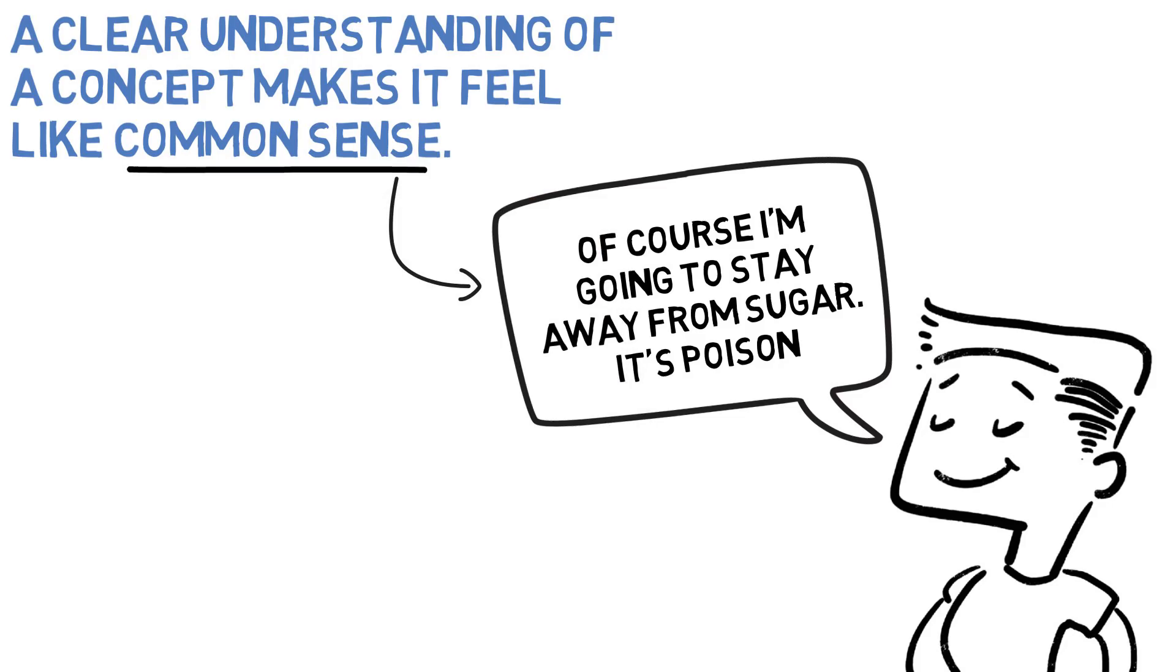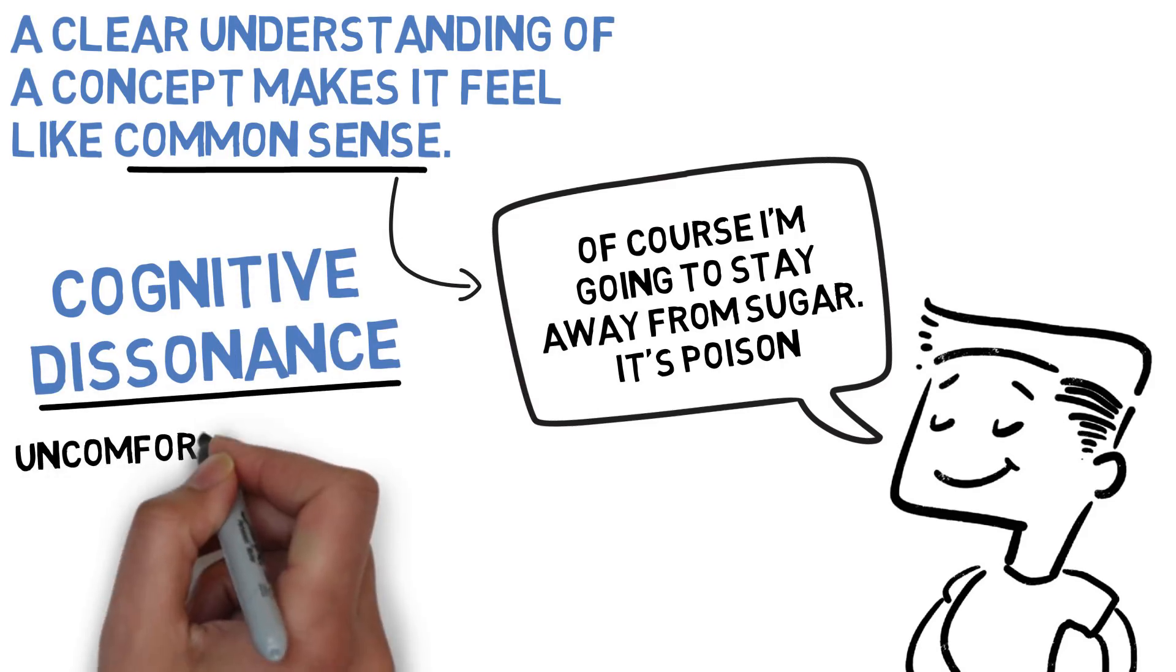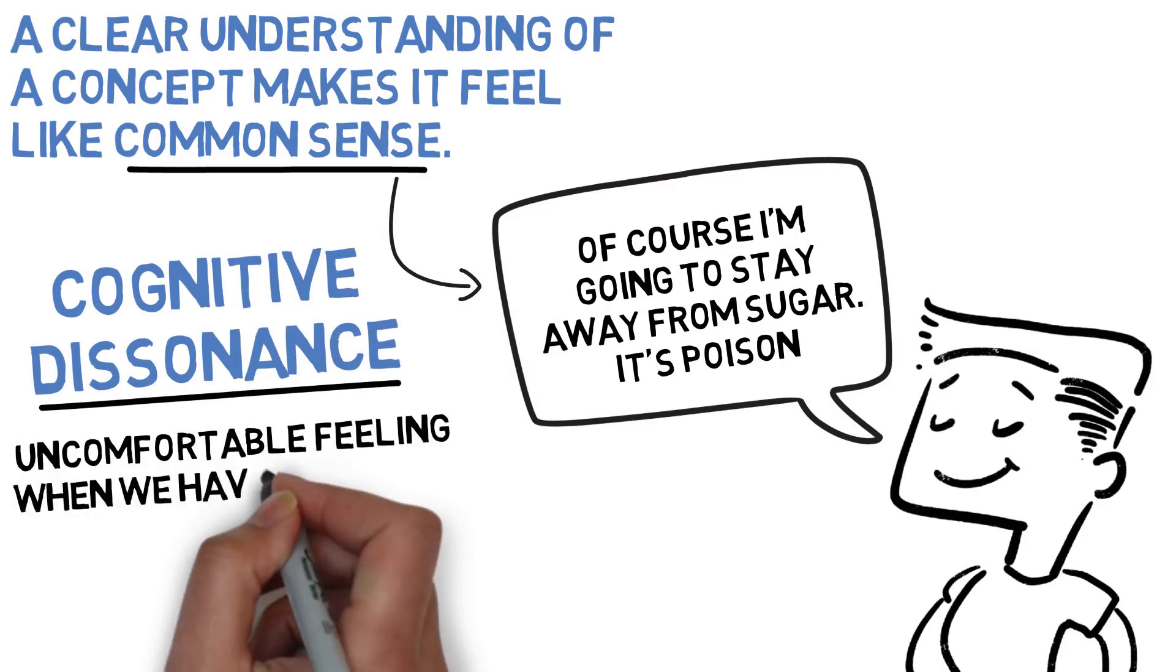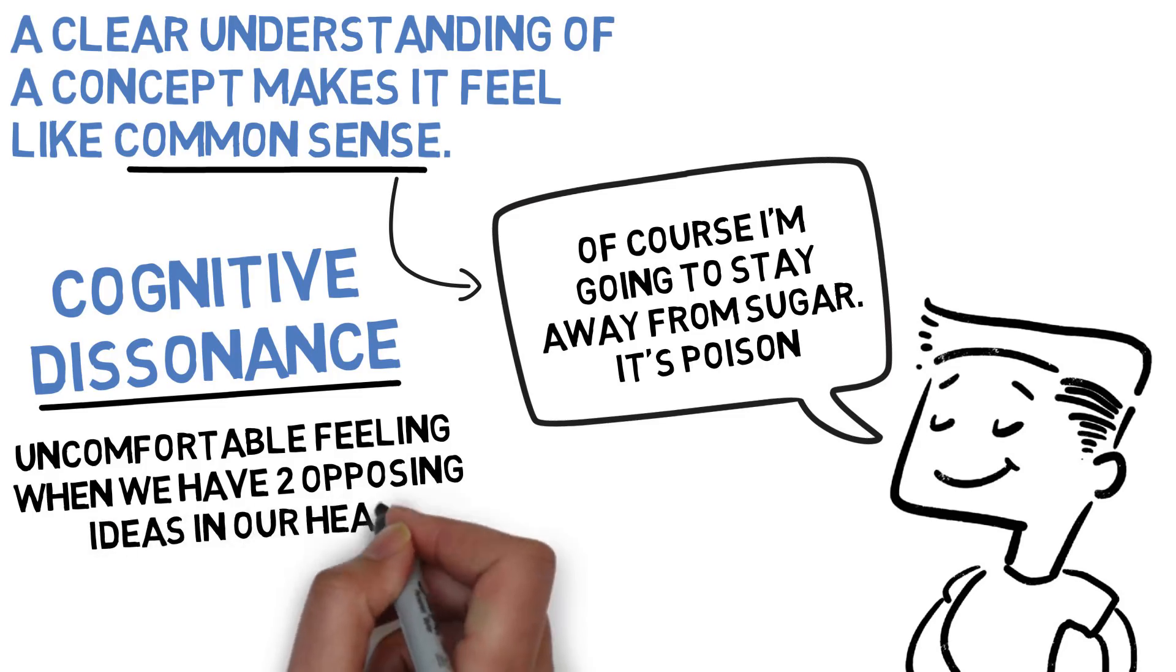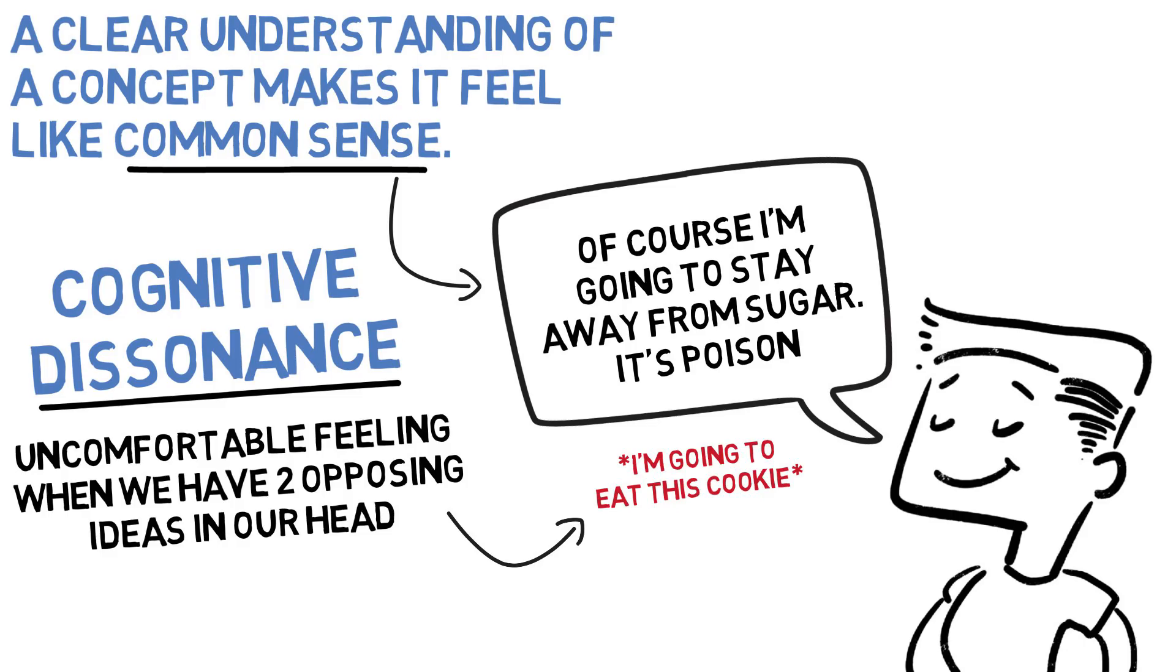And this relates back to a concept I talk about quite often on this channel, cognitive dissonance, which is the uncomfortable feeling we get when we have two opposite ideas in our head. Someone who truly believes that sugar is bad is going to feel very uncomfortable if he thinks about eating something that's high in sugar. This discomfort motivates him to stay away from the sugary product. Learning a concept properly is extremely effective because it allows you to use cognitive dissonance like a tool to make changes in your life.